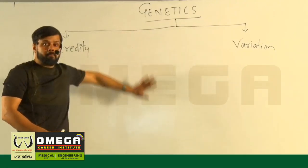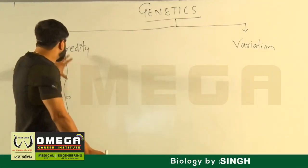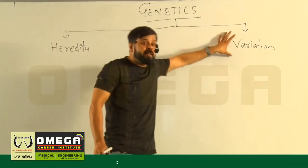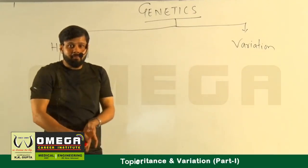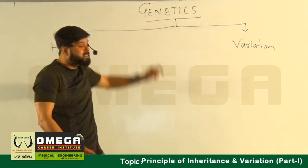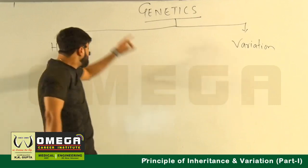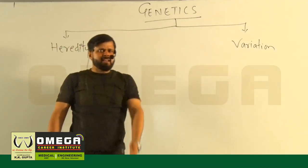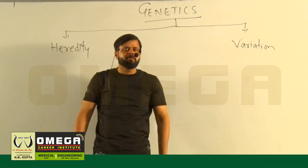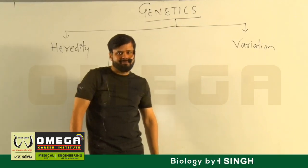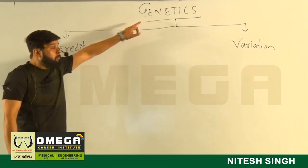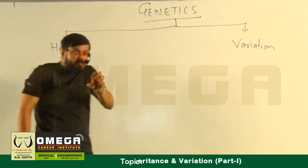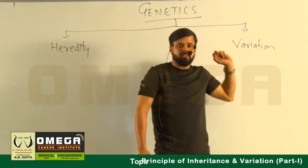Genetics is the branch of biology in which we study heredity and variation. Before we talk further, remember that heredity has a related branch called variation. Biology is a science of observation, and observations vary from person to person.